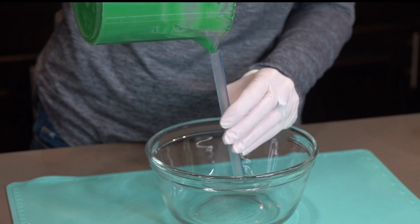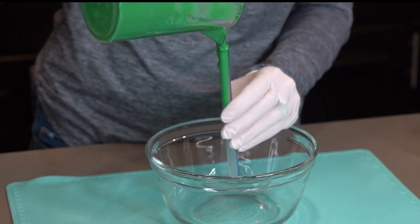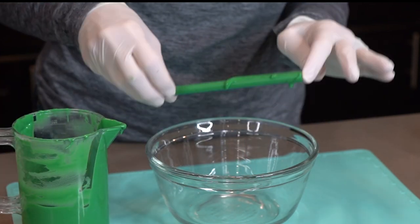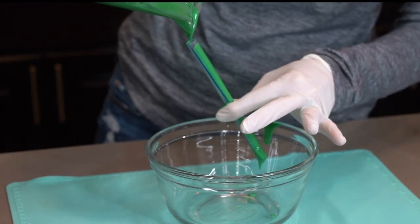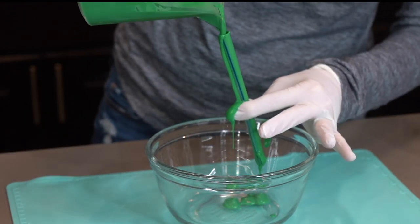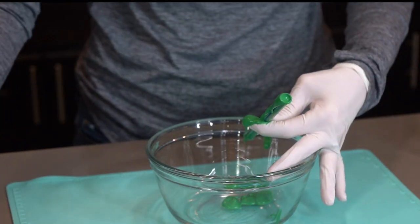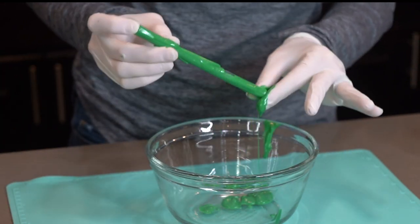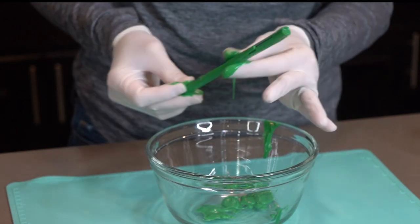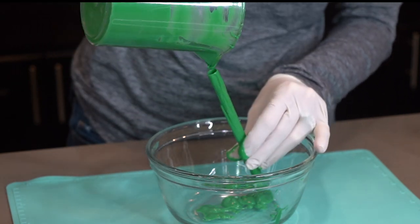Next, I've melted some green candy melts, and I thinned those out with some Paramount Crystals, and then I poured the green chocolate down into the straw. This is the messiest part. Just keep filling it until you've coated the entire inside of the straw, and then pop that into the freezer to chill.